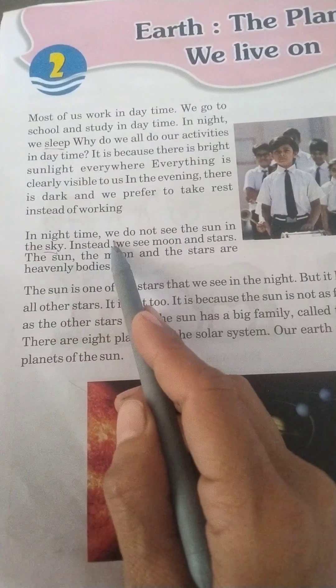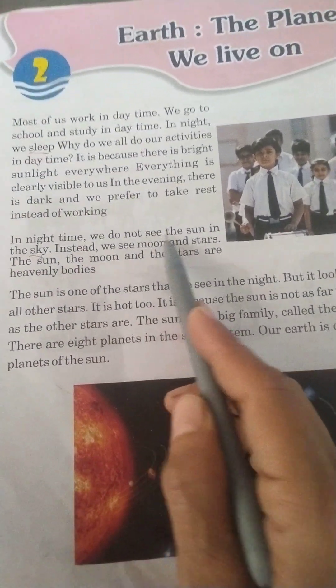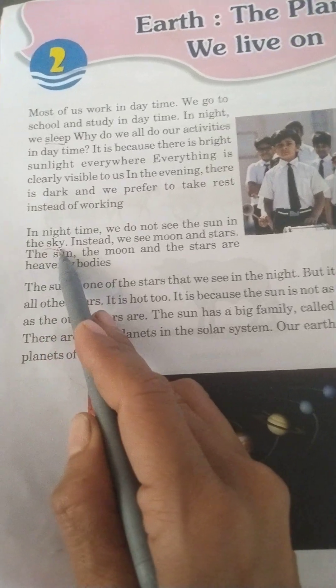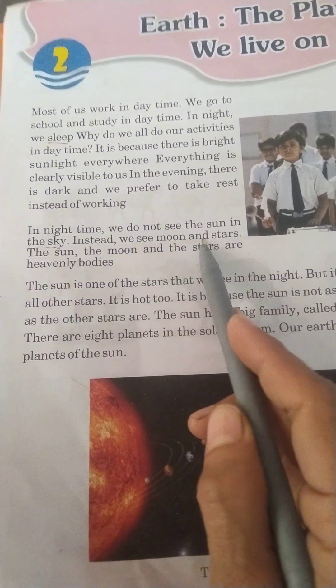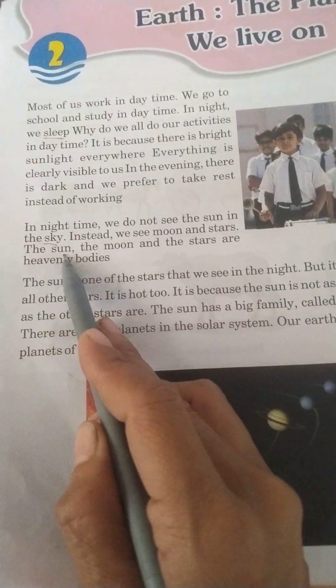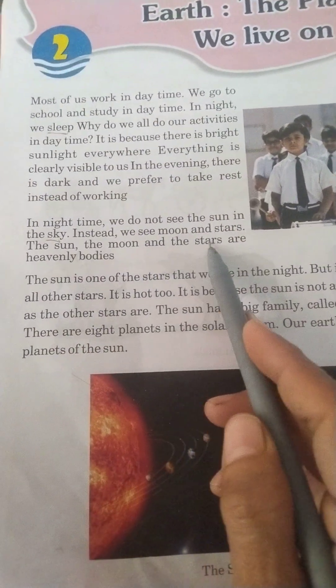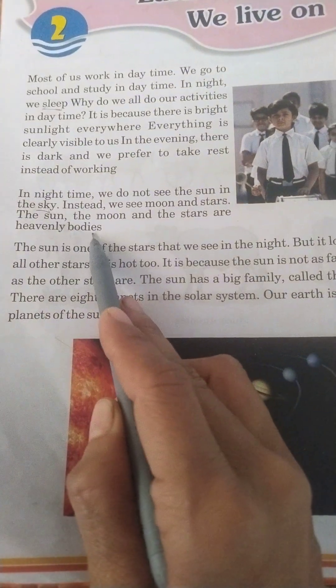In night time, we do not see the sun in the sky. Instead, we see moon and stars. The sun, the moon and the stars are heavenly bodies.